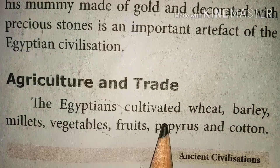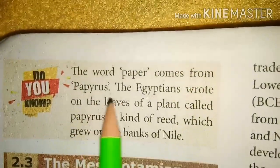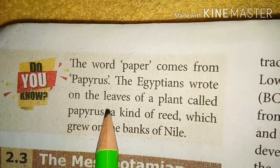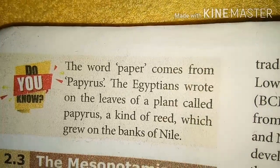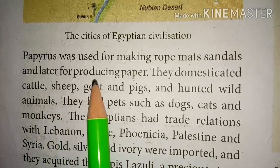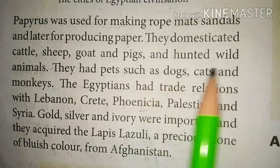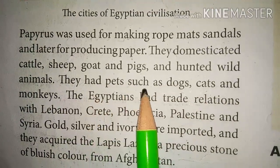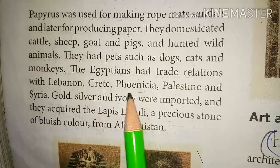Agriculture and trade: The Egyptians cultivated wheat, barley, millets, vegetables, fruits, peppers and cotton. The word 'paper' comes from papyrus. The Egyptians wrote on the leaves of a plant called papyrus, a kind of reed which grew on the banks of the Nile. Papyrus was used to make rope, mats and sandals, and later for producing paper. They domesticated cattle, sheep, goat and pigs, and hunted wild animals. They had pets such as dogs, cats and monkeys. The Egyptians had trade relations with Lebanon, Crete, Phoenicia, Palestine and Syria.